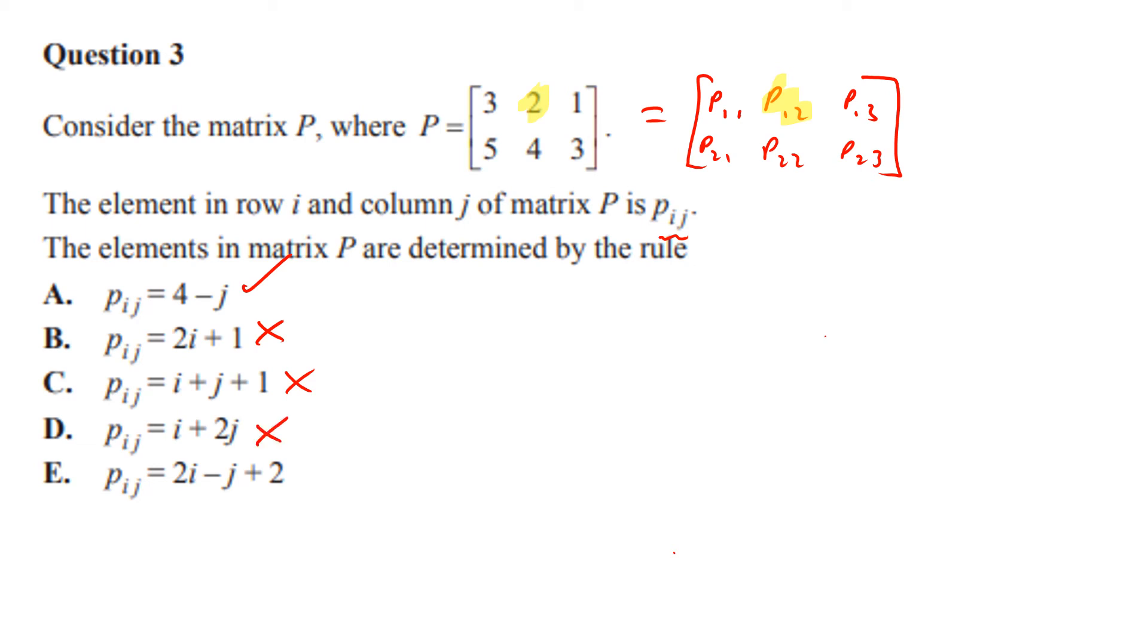1 times 2 is 2, minus 2 is 0, plus 2 is 2. It is correct. So we're going to leave those crosses there - those three are definitely wrong. We've got to decide between A and E.